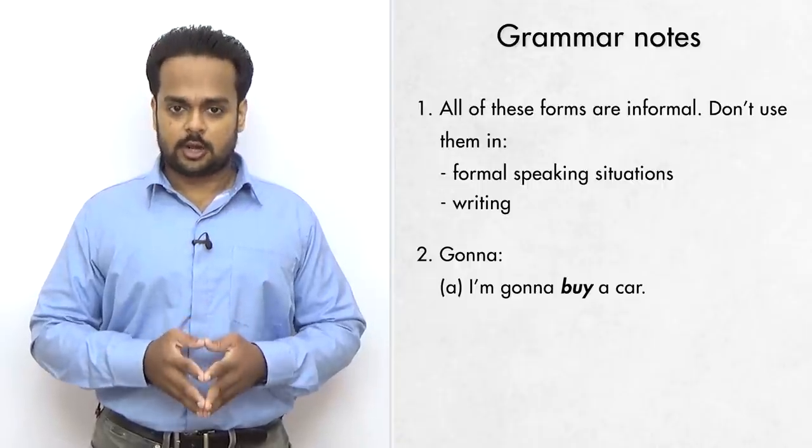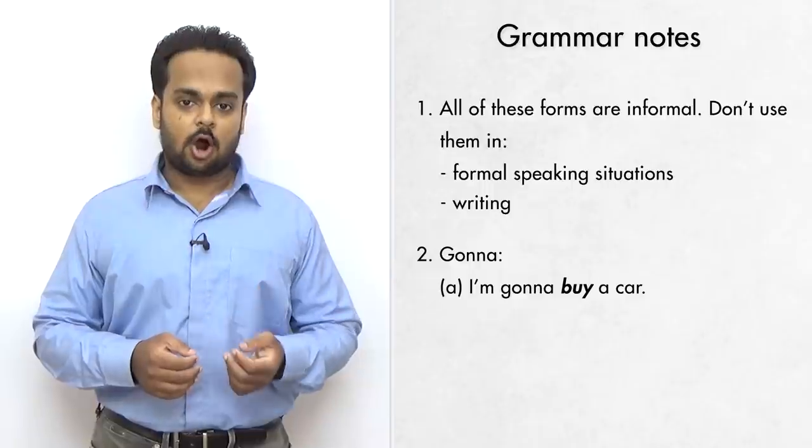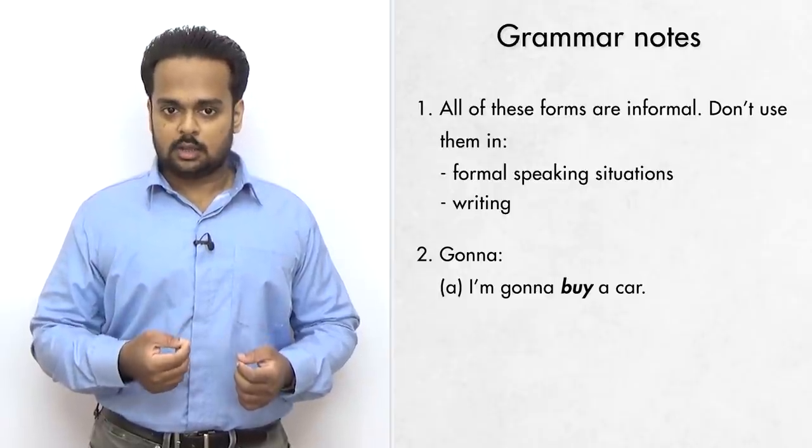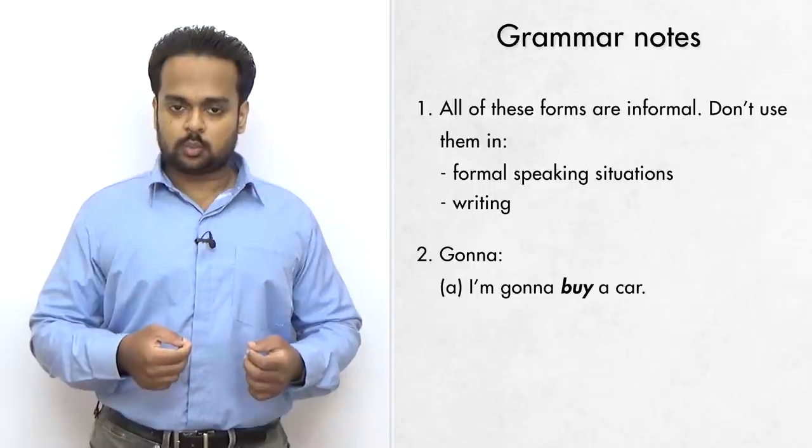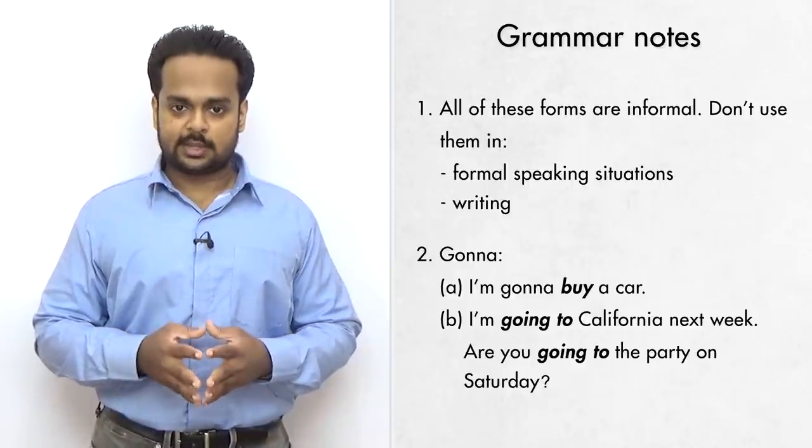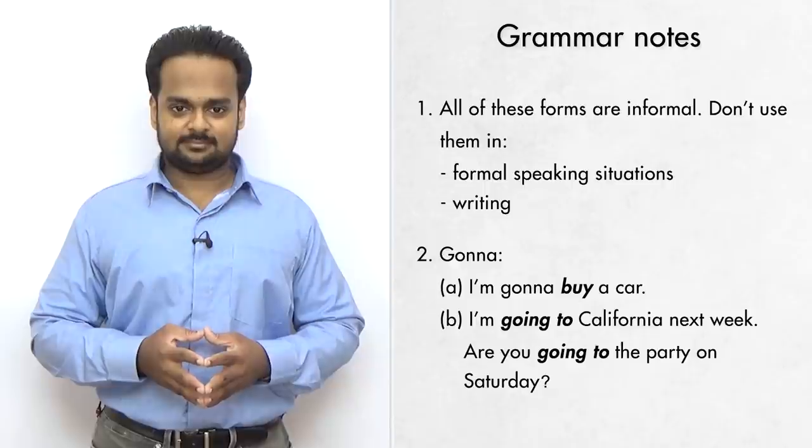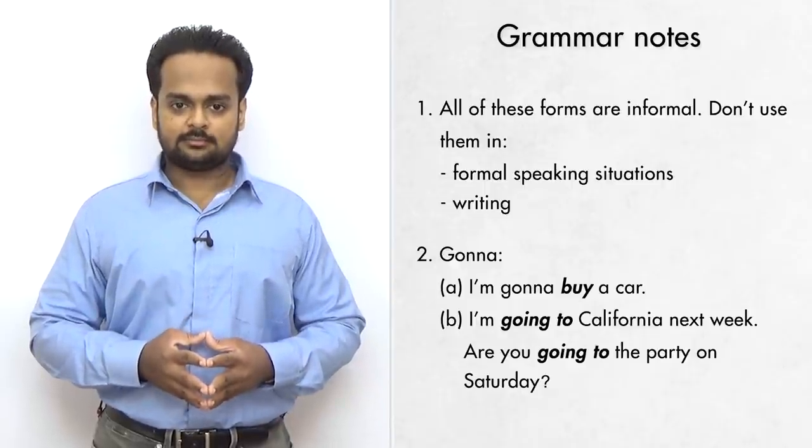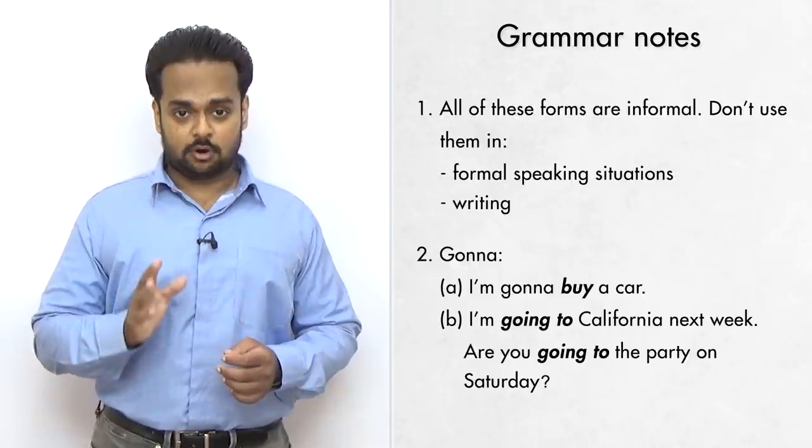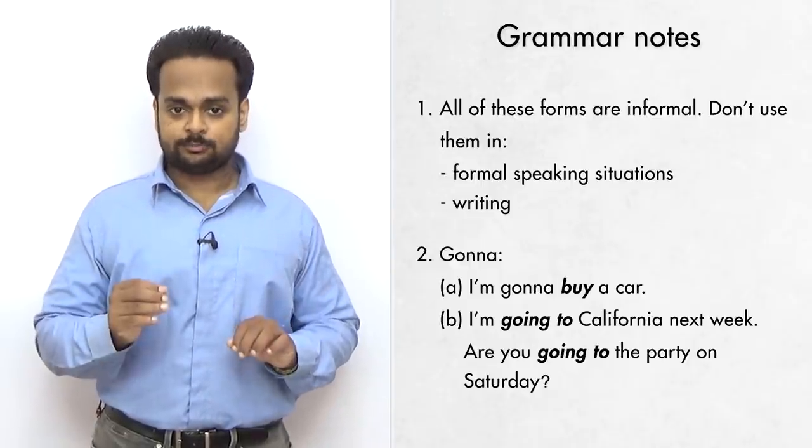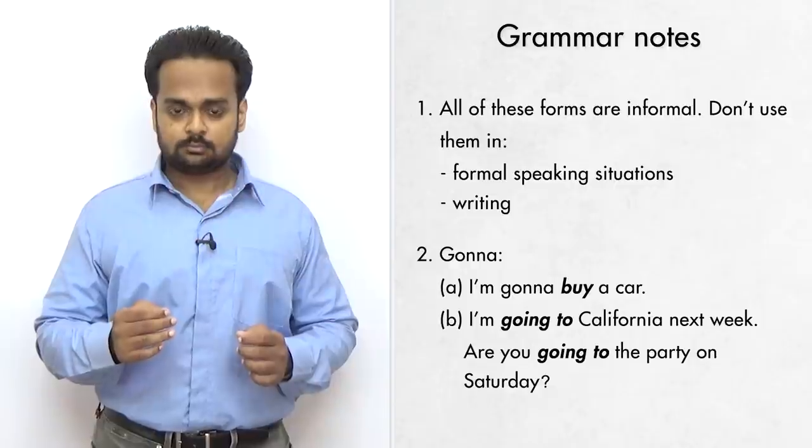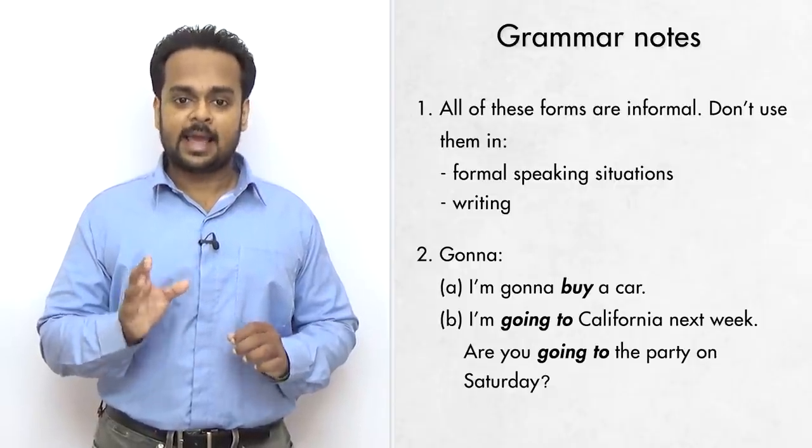Grammar point number two relates to gonna. In the sentence, I'm gonna buy a car, notice that there is a main verb – that is an action – buy. So going to or gonna just acts as a helping verb to show that we are talking about the future. But have a look at these sentences. I'm going to California next week. Are you going to the party on Saturday? In both of these sentences, going is the main verb. Notice that there is no other verb after going to. So in these situations, we do not say gonna – we say the full form going to. Remember, only say gonna if going to is used as a helping verb.